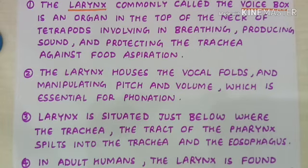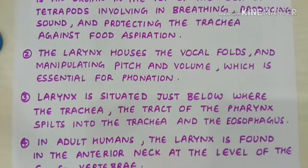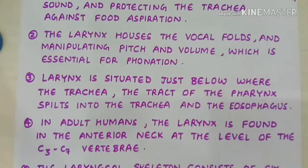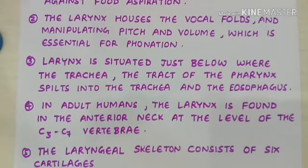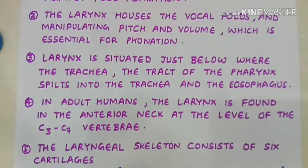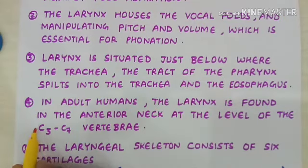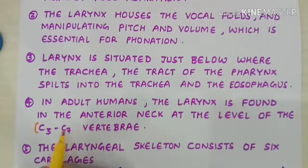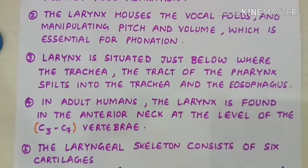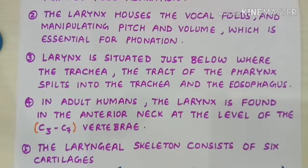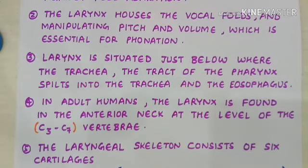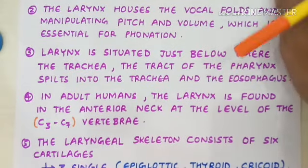The larynx is situated just below where the pharynx splits into the trachea and the esophagus. In human adults, the larynx is found in the anterior neck at the level of cervical vertebra C3 up to C7.